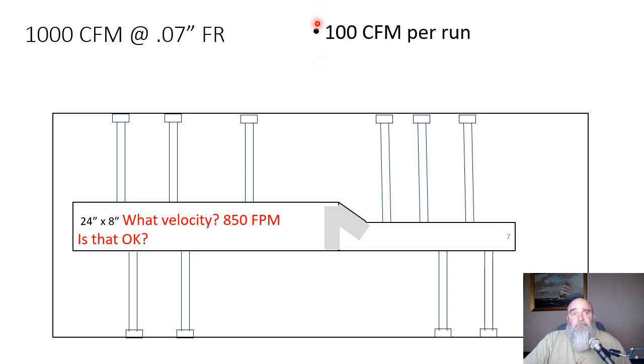So our velocity was 850. Is that okay? And the answer to that is yes. Our maximum velocity in a supply trunk as per Manual D is 900 feet per minute.